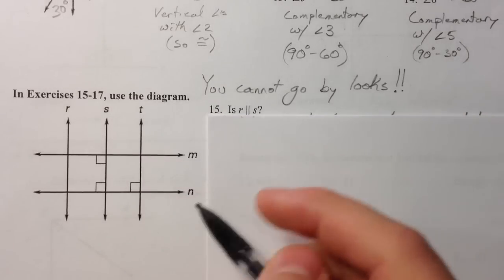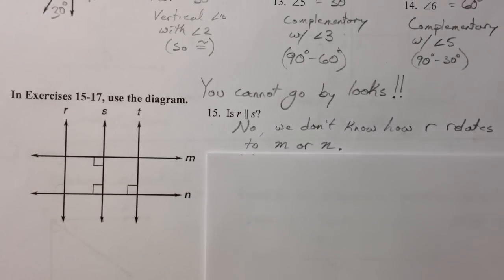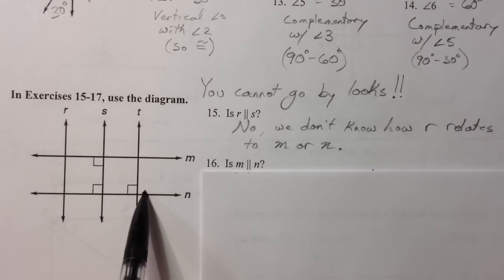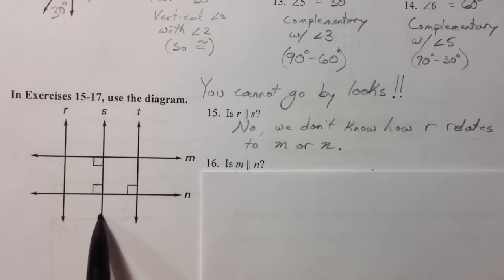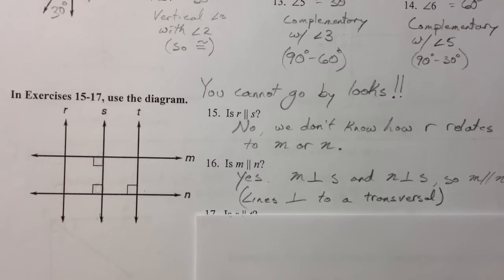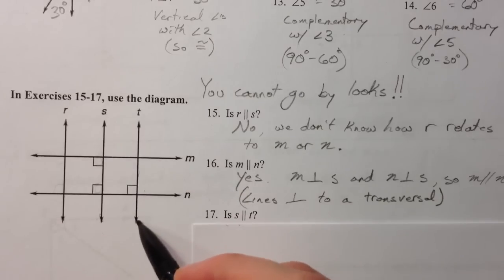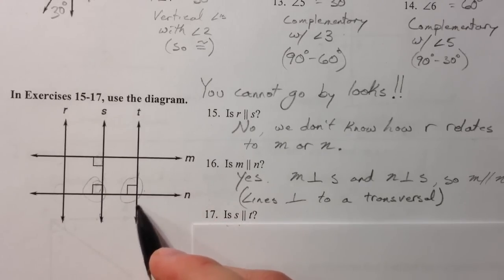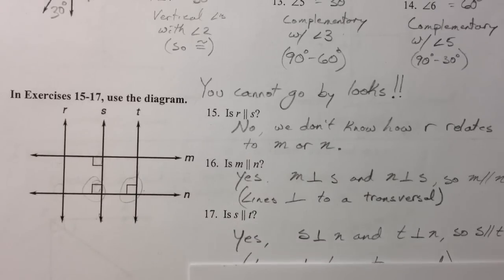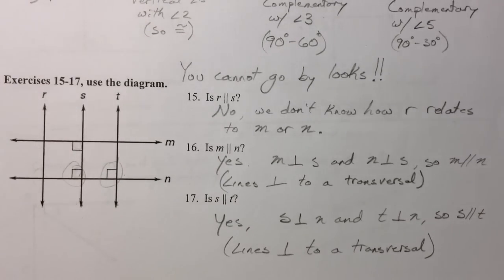Use the diagram. Is R parallel to S? We don't have any relationship with M and N, so we can't say anything there. Is M parallel to N? Line S has two 90-degree angle marks, so S is perpendicular to M and S is perpendicular to N — yes, by the lines perpendicular to a transversal theorem. Is S parallel to T? S is perpendicular to N and T is perpendicular to N, so because they're both perpendicular to the same transversal, they must be parallel. Using perpendicular lines to show parallel, or using parallel to show perpendicular — good luck as you work through these proofs.